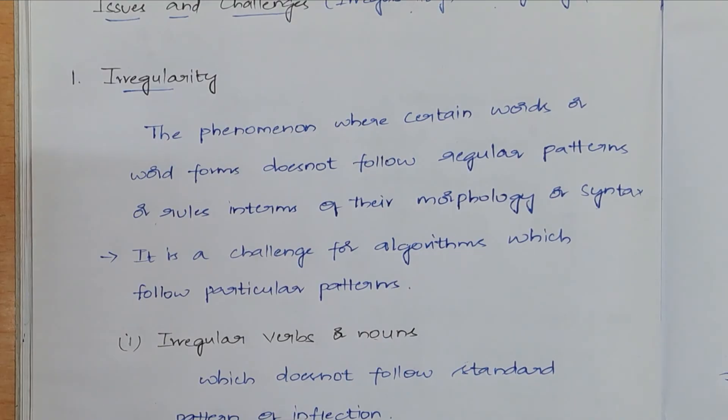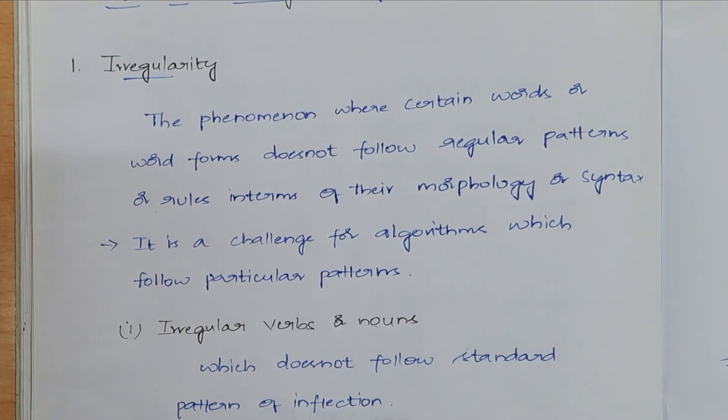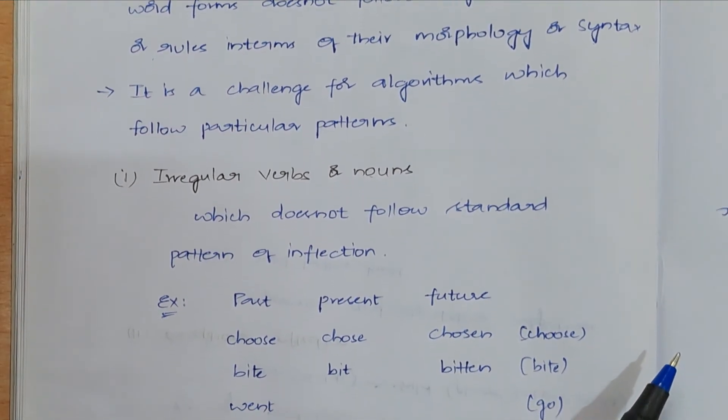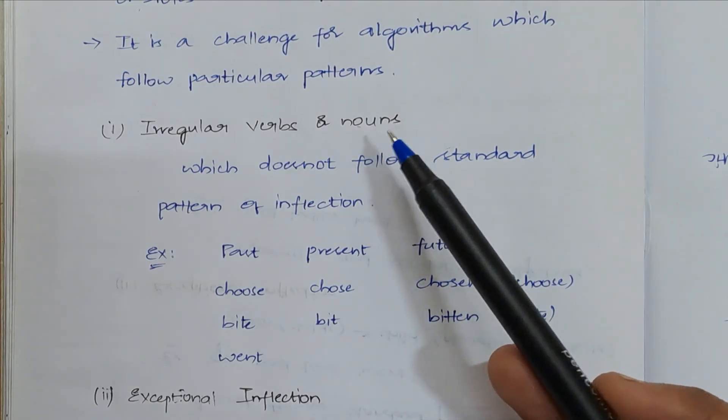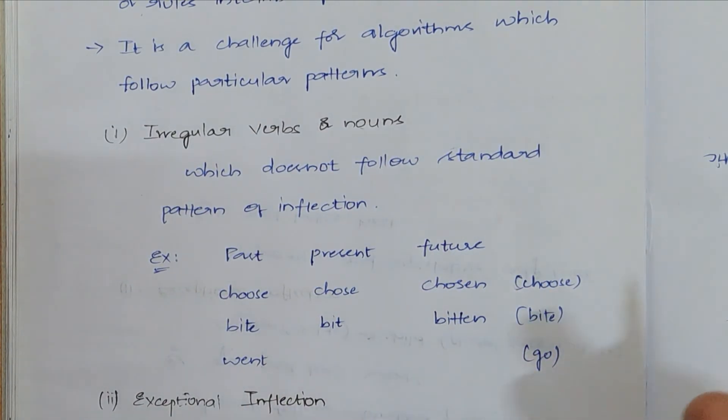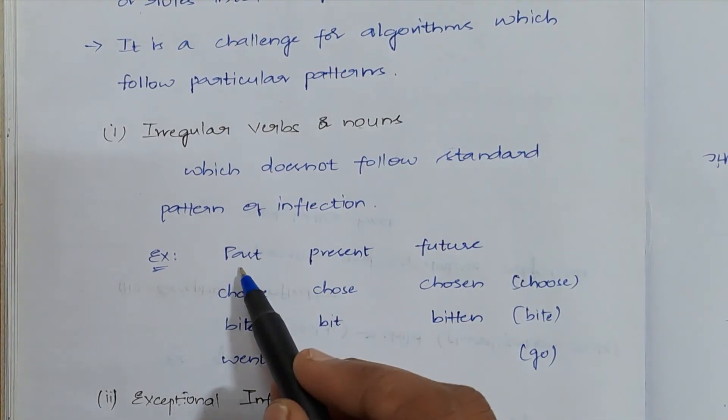There are many word forms like this. I have only described two of them. First one is irregular verbs. What if there are irregular verbs which do not follow a certain standard pattern? Let me take an example.